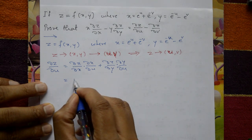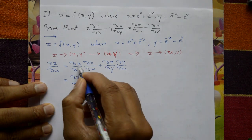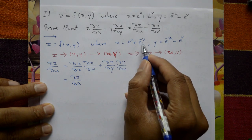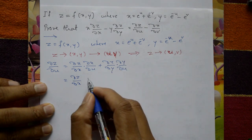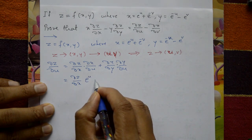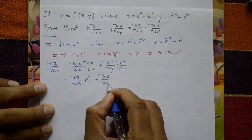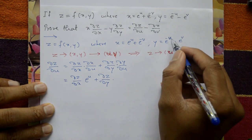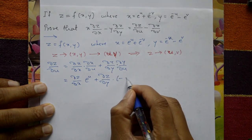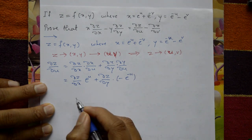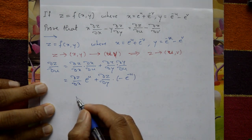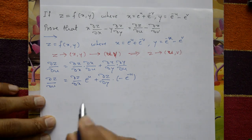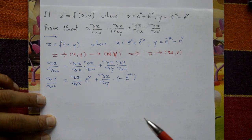dou z by dou x is as it is. Differentiation of x with respect to u, with v treated as constant, is e raised to u. Plus dou z by dou y as it is, and differentiation of y with respect to u gives minus e raised to minus u. This is equation number 1.